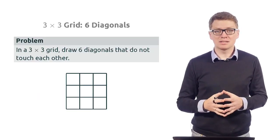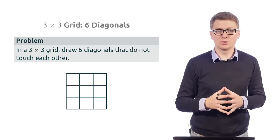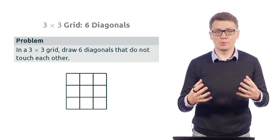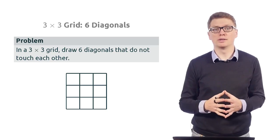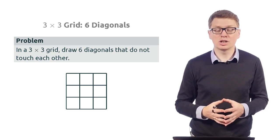The goal in this puzzle is to place many diagonals into a square grid such that no two diagonals have a common point, or in other words, they do not touch each other.